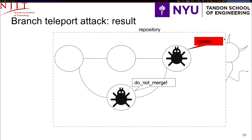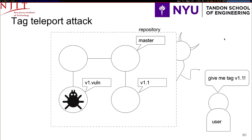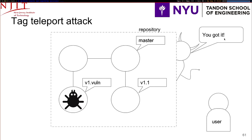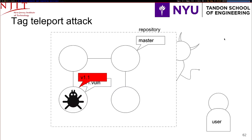Analogous to the example I gave at the beginning of the talk, there's a tag teleport attack in which a reference is teleported into another place in the history of Git. In this case, we have a tag that's known to be vulnerable — think about Django 1.4.11 — and we also have version 1.1, which should be trustworthy. A developer wants to install version 1.1, the non-vulnerable one. The server may want to equivocate: this tag teleport attack simply requires the attacker to move the pointer back to the previous tag. Most package managers we tested resulted in a clean installation with no warnings.